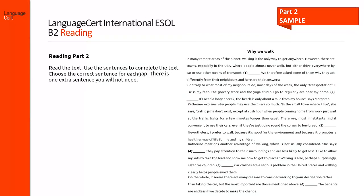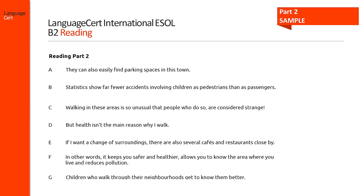This task is the second reading task and it aims at assessing the candidate's understanding of how meaning is built up in a text. The removed sentences may be a topic sentence, a summarizing sentence, a sentence developing an idea, one emphasizing a point or introducing a transition to a new idea. Candidates are provided with seven sentences but need to use only six of them. Here are the seven sentences to choose from to complete the six gaps in the text on the previous slide.